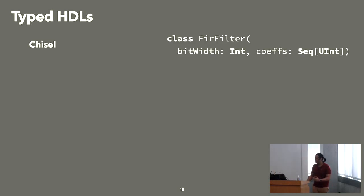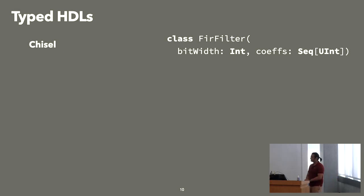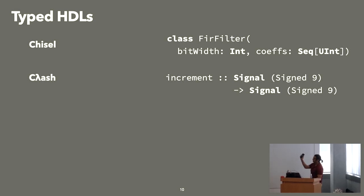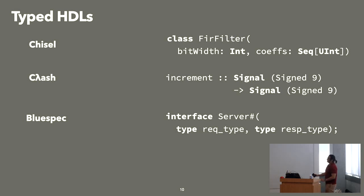The software community has used a lot of types to encode interesting constraints on interfaces. So let's look at our typed HDLs. We have to talk about Chisel — here's the example from yesterday's talk. We have our filter, and we get to specify that our bit width is an integer and our coefficients are a sequence of integers. Already more interesting complex types than in Verilog. But this doesn't capture anything about the timing behavior. If you're a programming languages person, you might have used Clash, which is in Haskell, using an even funkier syntax. But again, nothing about the underlying timing and structural properties. Same with BlueSpec — even more funky syntax, nothing about the timing behavior of your design.